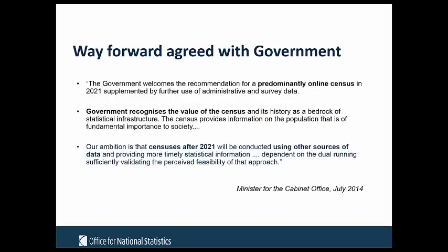Following that recommendation, the Government agreed on that direction but made a stronger ambition that censuses after 2021 would be conducted using other sources of data. At the time, this was dependent on dual running — sufficiently validating the feasibility of that approach — so we would run both an admin data-based approach and compare it with our 2021 census outputs. In 2023, we would come back and make a recommendation about the future of censuses in England and Wales.